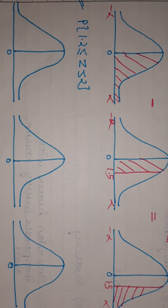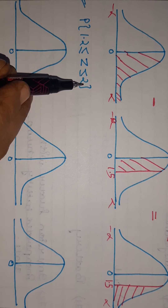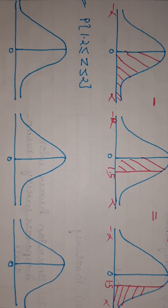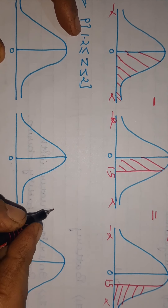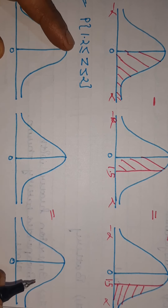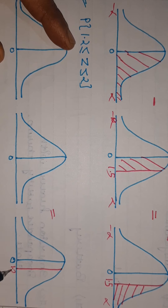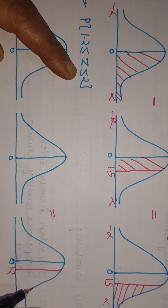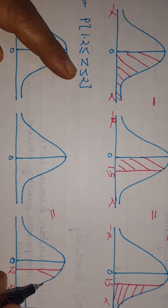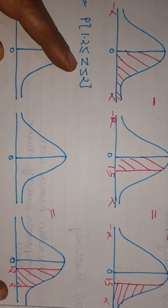Next, the area from Z = 1.2 to Z = 2. Previously it was from minus 1.2 to 2, but now both values are positive. In the final diagram, 1.2 is on the positive side, and 2 is above 1.2. The area we want is between 1.2 and 2.